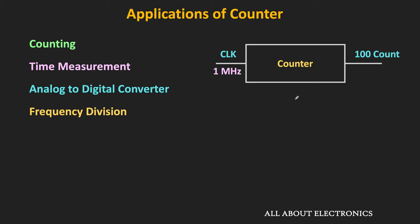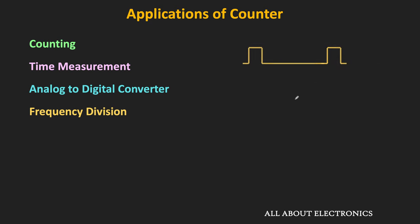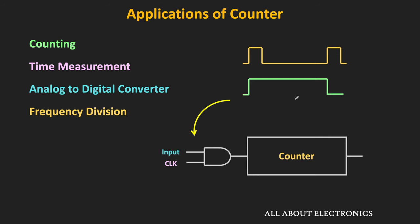In this way, using the counter, we can take a specific action at a predefined time. Apart from that, using a counter we can also measure the time duration between two pulses. With the help of a flip-flop or any other circuit, we can generate a time pulse whose duration is the difference between the two rising edges. This signal can be applied to the counter with the help of an AND gate, so when the input signal is high, only then will the clock signal be applied to the counter and the counter will increment its count. If the clock frequency is 1 MHz and the counter reaches a count of 50, it means the difference between the two time pulses is 50 microseconds.